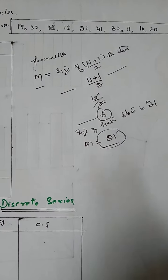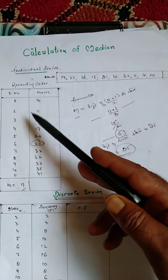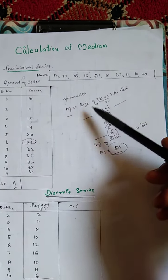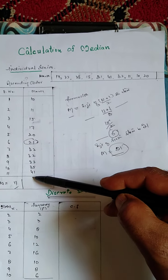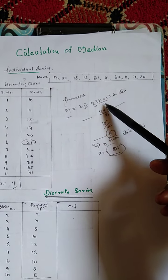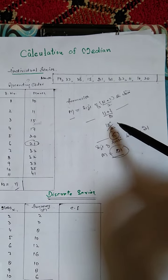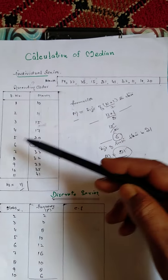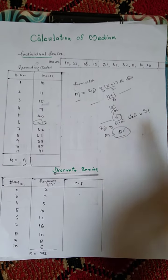Now look, this was our series. This ordering we have given in ascending order. And this formula we have used: n is the number of items, plus 1 is from formula, 2 is from formula. N is 11 plus 1 by 2 is 12 by 2, which is equal to 6. The sixth item is 21, so our median is 21.